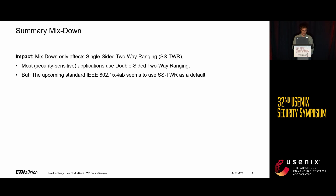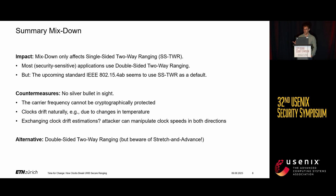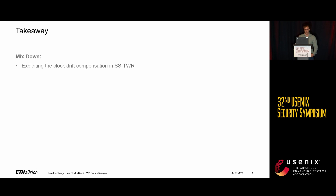To summarize, the mixed down attack affects only single-sided two-way ranging and not the double-sided mode, which is used today by most security-sensitive applications. However, the upcoming standard seems to use single-sided ranging as a default. Regarding countermeasures, there is no silver bullet. It's hard to prevent because the initiator is required to do compensation, and we can simply exploit that. The alternative is to use double-sided two-way ranging, which we also recommend in our paper.